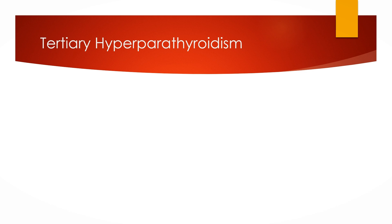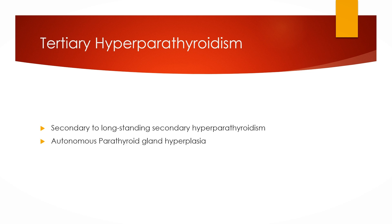In tertiary hyperparathyroidism, as in secondary hyperparathyroidism, low calcium and hyperphosphatemia are a stimulus for parathyroid hormone secretion, but if this stimulus persists for a prolonged period of time, there is autonomous parathyroid gland hyperplasia and in some cases development of parathyroid gland adenoma. In this case, plasma calcium and parathyroid hormone are both raised.